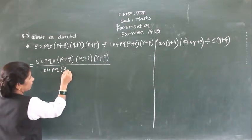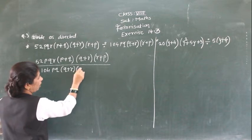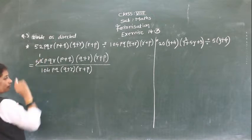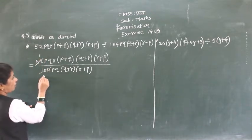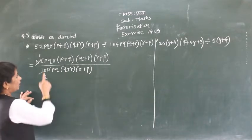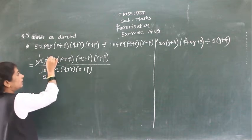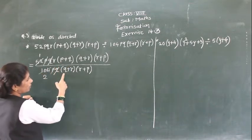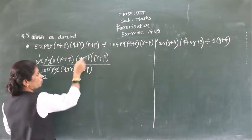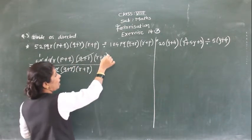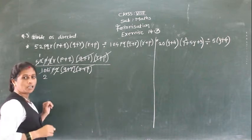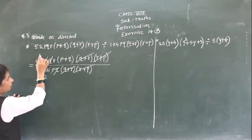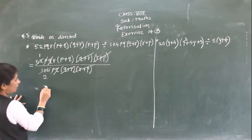Now see here: 52 ones are 52 and 52 twos are 104. Then this p, this p gets cancelled. This 2, this 2 gets cancelled. So what is remaining: only r. Then (q+r) gets cancelled, (r+p) factor cancels. So what is remaining: 1/2, and here r in bracket (p+2).